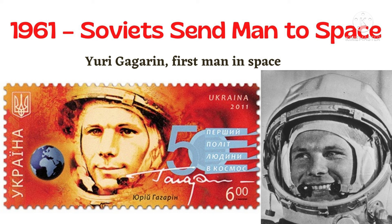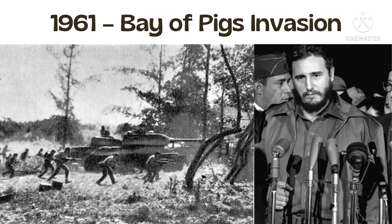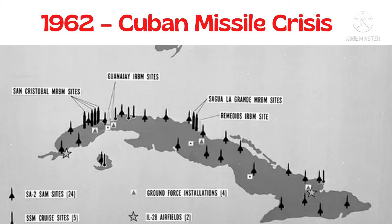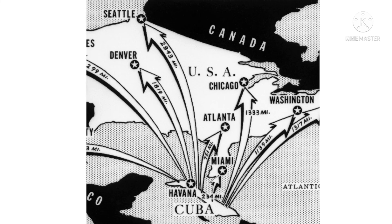In 1957, Sputnik was launched — part one of the space race — the Soviet Union's first satellite sent to Earth. In 1961, Soviet cosmonaut Yuri Gagarin became the first man in space. Also in 1961, the Bay of Pigs: communist leader Fidel Castro led Cuba; the USA wanted to remove Castro but suffered a major failure and embarrassment. In 1961, the Berlin Wall was built by the Soviet Union to stop the brain drain from East Berlin to West Berlin.